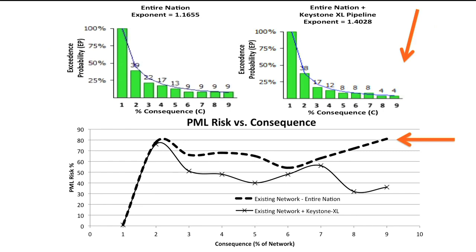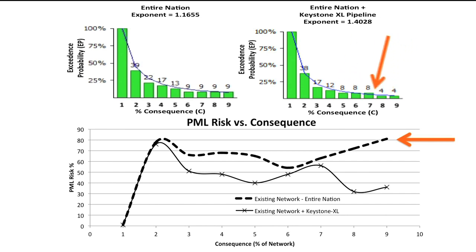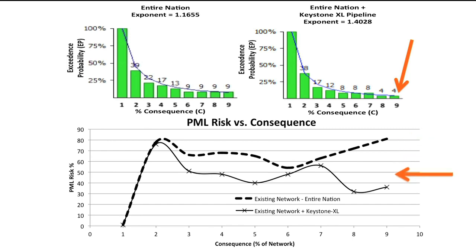A surprising finding was that the addition of the Keystone XL pipeline, which will start in Alberta, Canada and run down to Steel City, Kansas, reduces the risk of a cascade failure in the national system. If you notice, the tail tapers down quicker with the addition of the Keystone XL pipeline. This translates to a thinner tail and hence a lower risk. At the highest consequence, the addition of the Keystone XL pipeline reduces the probable maximum loss by a whopping 55%. Now that's a big bang for the buck.